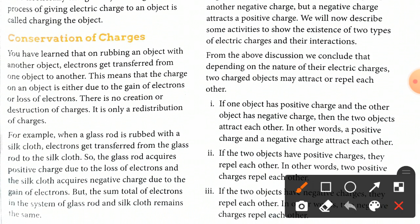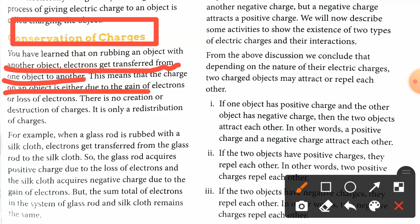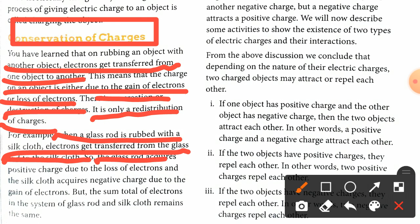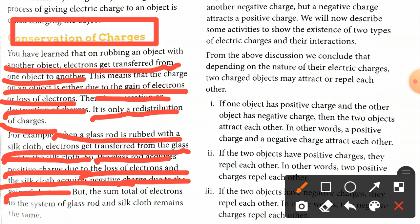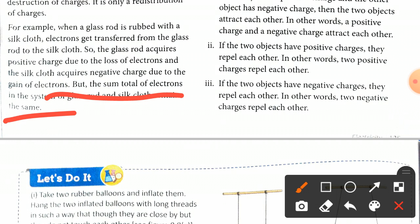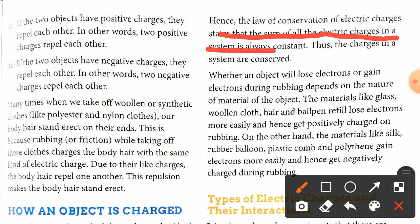Conservation of charge is an important concept. When rubbing one object with another, electrons get transferred from one object to another. The charge on an object is either due to the gain or loss of electrons — there is no creation or destruction of charges, only redistribution. For example, when a glass rod is rubbed with silk, electrons transfer from the glass rod to the silk. The glass rod acquires positive charge due to loss of electrons and the silk acquires negative charge due to gain of electrons. The total charge in the system remains the same. The law of conservation of electric charges states that the sum of electric charges in a system is always constant.